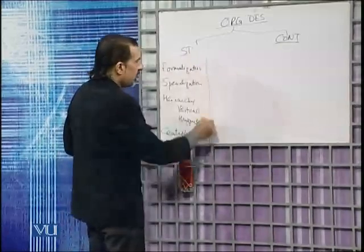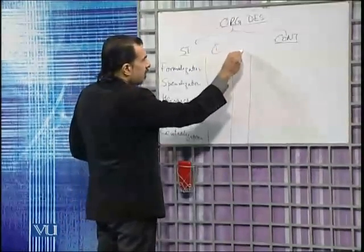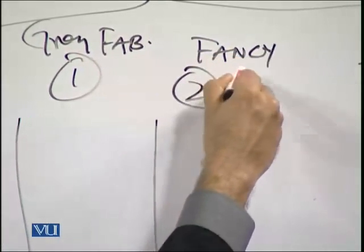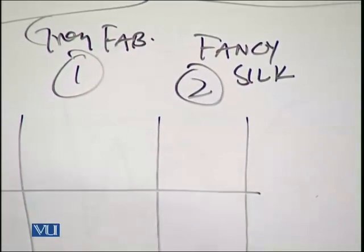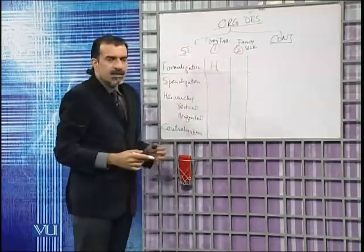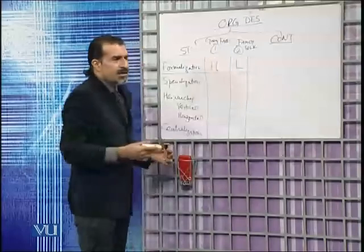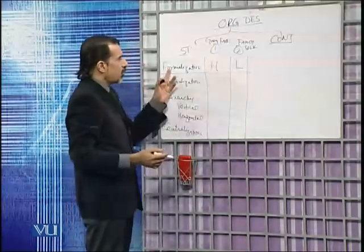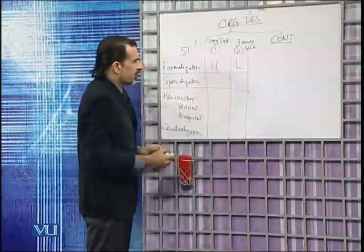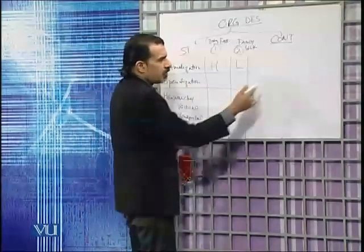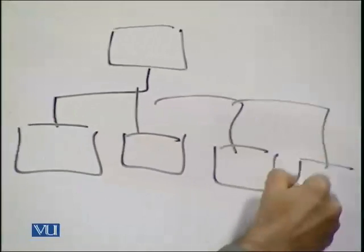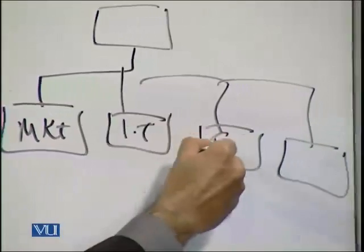Consider two companies: a gray fabric producing company and a fancy silk producing company. In the gray fabric company, formalization will be high — a lot of work will be documented and bureaucracy will be high. In the fancy silk company producing differentiated products with ongoing innovation, documentation and bureaucracy are not heavily emphasized, so the company will have low formalization. Specialization will again be high for the gray fabric company.